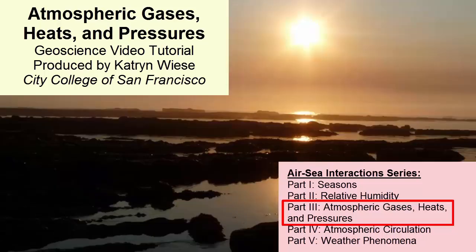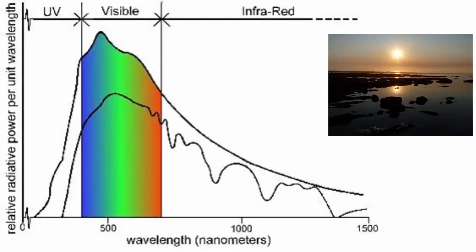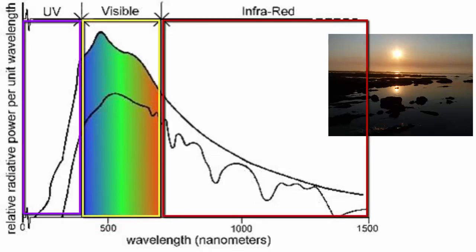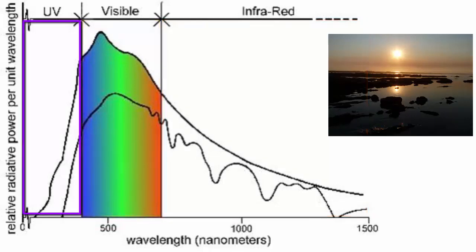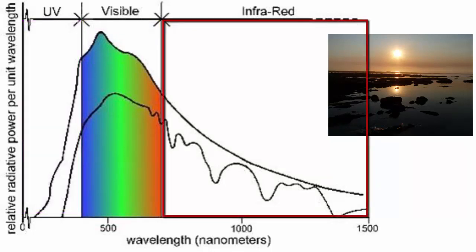The Sun heats up the surface of the Earth through the heat transfer method described last week: radiation. This radiation consists of ultraviolet, visible, and infrared light. Ultraviolet, or UV, is the shortest in wavelength. Infrared, or IR, is the longest.